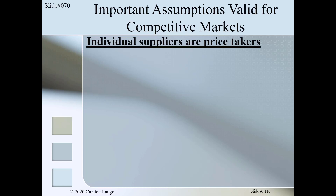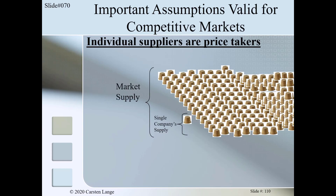Let's challenge the third assumption to see if it makes sense. Maybe a producer wants to lower her price to sell more — but that does not make sense. The invisible hand sets the price so that demand equals supply, so the producer can anyway sell whatever she produced. What if she produces more? Would she have to lower her price to sell the extra product? No, because with so many other producers, her extra production would not influence the market price. Even if a company doubles its production, the overall increase in market supply would be so small that the market would not even recognize it.